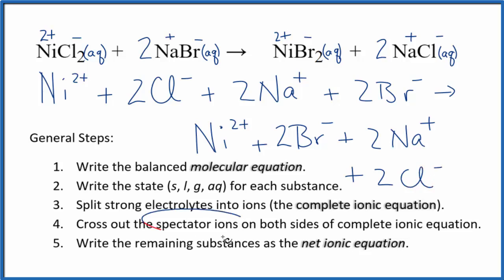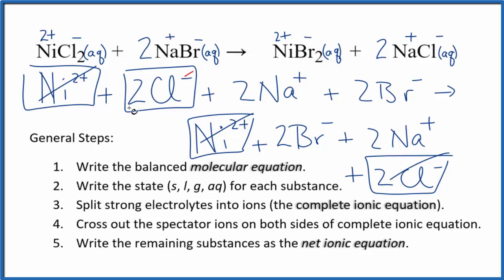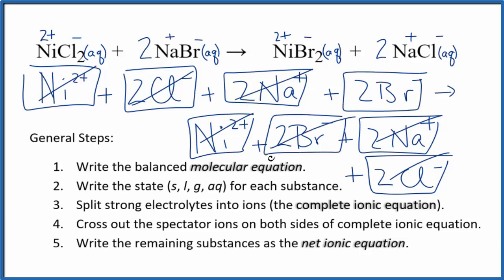Now we can cross out the spectator ions. They're on both sides. We have our reactants here and our products here. We have nickel 2+ in the reactants and the products. Cross those out. They're spectator ions. Two chloride ions here, again 2 chloride ions. Two sodium ions and in the products, cross them out. And then finally, we have 2 bromide ions here and in the products.